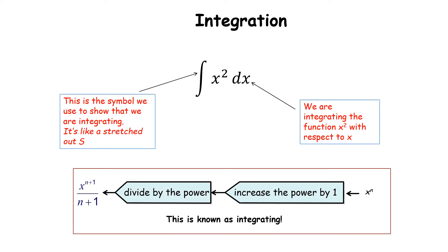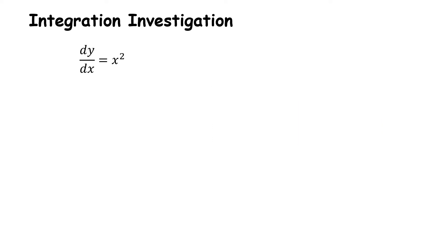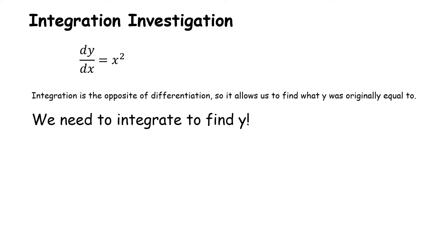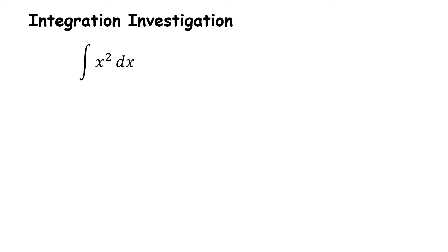If we integrate x squared, we follow the rule: add 1 to the power and divide by the power. Suppose I differentiated something and got x squared — to find the original y, I work backwards by integrating. Adding 1 to the power gives x cubed, and dividing by 3 gives x cubed over 3. That's what we started with.